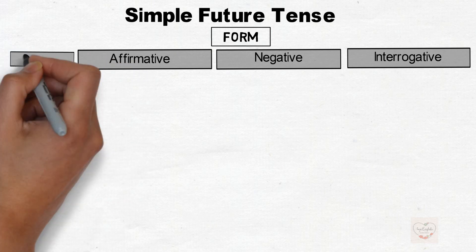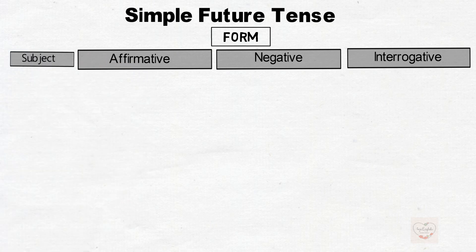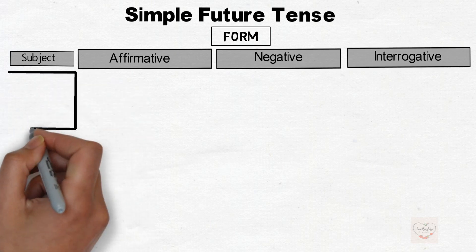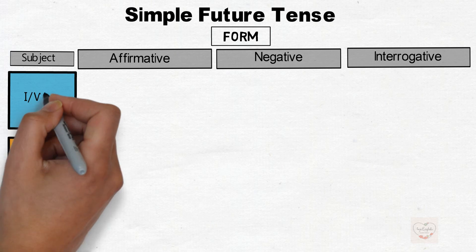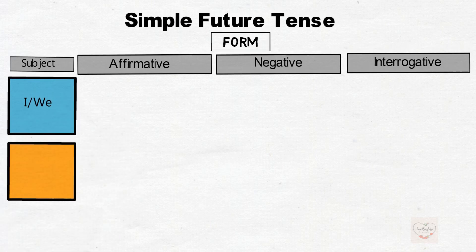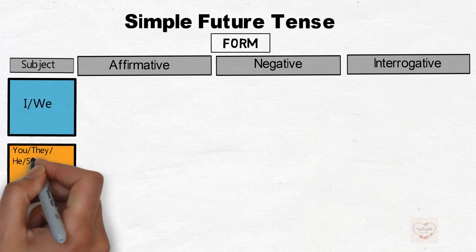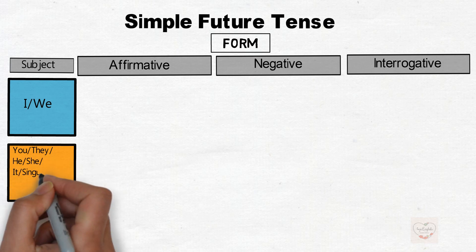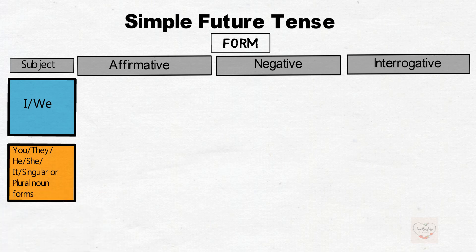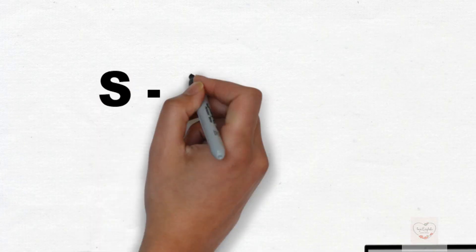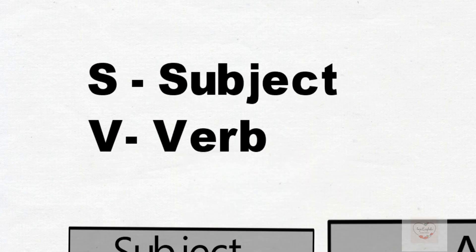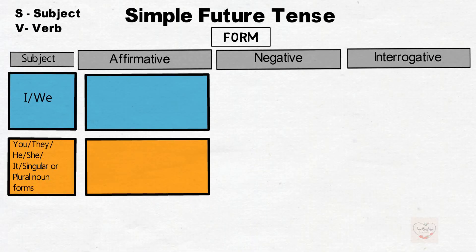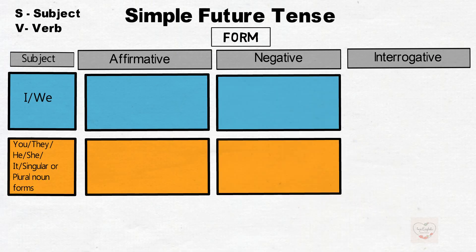Subject. The subject can be I or we, or else the subject can be you, they, he, she, it, or any other singular or plural noun. Form S is for subject. Let's see how to form sentences under this tense.